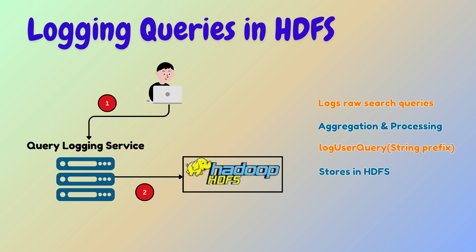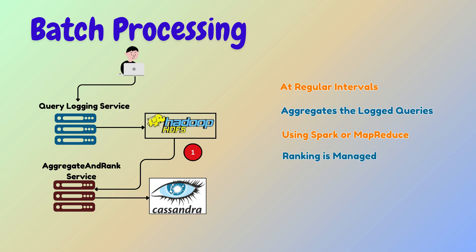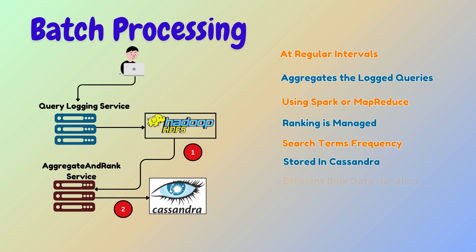At regular intervals — for example every 15 minutes — the query aggregate and rank service aggregates the logged queries using distributed processing frameworks like Spark or MapReduce. Ranking is managed during this batch aggregation phase, where the frequency of search terms is computed to determine their relevance and stored in Cassandra. This ensures bulk data is handled efficiently, reducing system load and maintaining optimal performance.